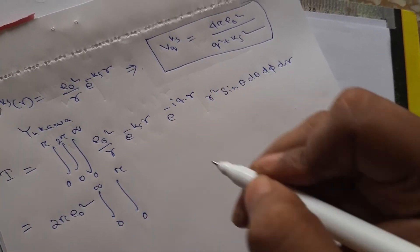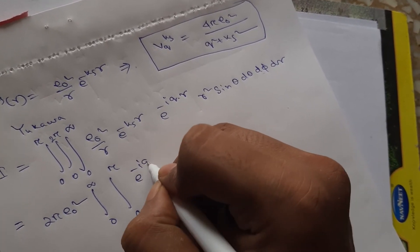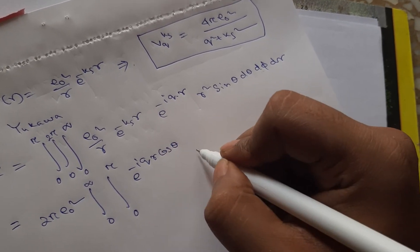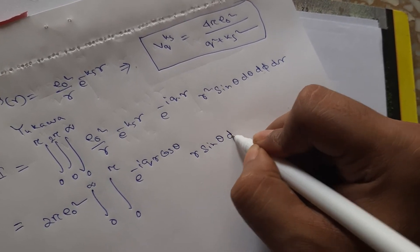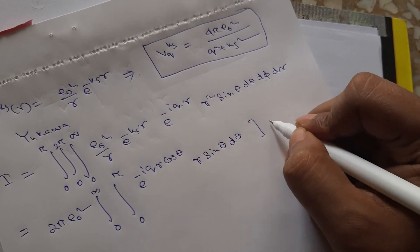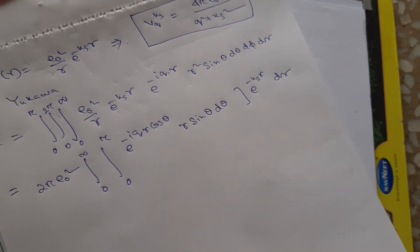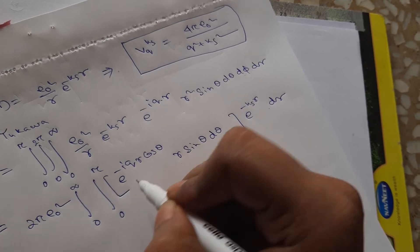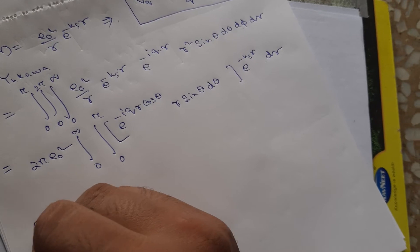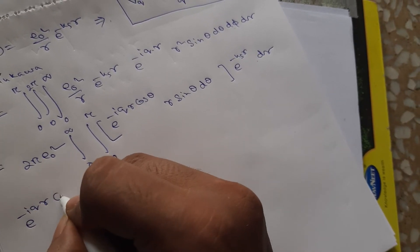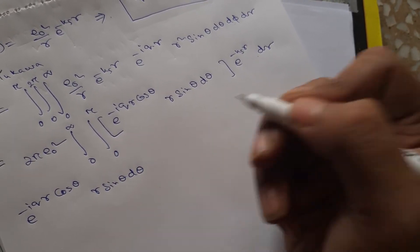We first handle the θ integration. The relevant terms are e to the power minus i q r cos θ, multiplied by sin θ dθ, and then the remaining radial term e to the power minus k_s r dr. We evaluate this θ integral first.